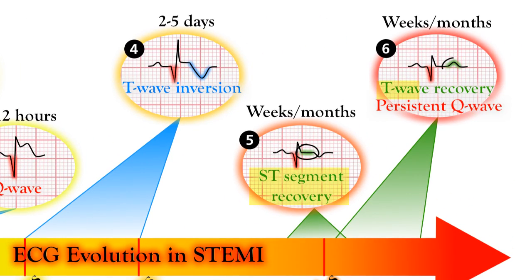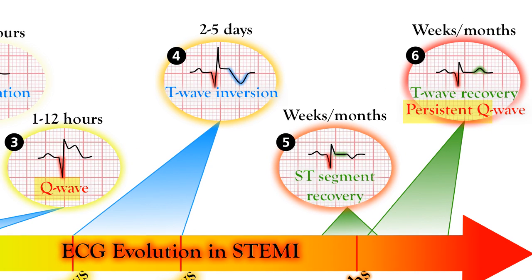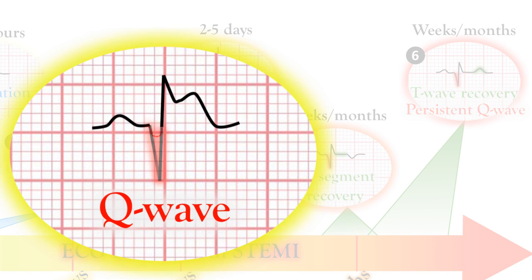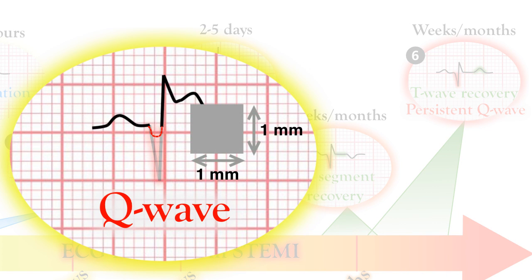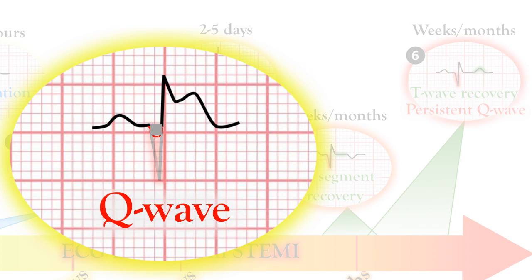Over time, the ST elevation and the T wave changes resolve completely. However, when there is necrosis due to infarct, a persistent and irreversible Q wave will be present in the infarcted territories. In order to be considered significant on the EKG, the Q wave must be at least 1 mm or one small box in width and at least 1 small box deep.